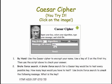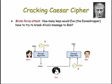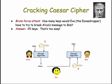Hopefully you enjoyed those exercises. How do you crack a Caesar cipher? In other words, how does Eve break these messages? One question you might ask is, how many different keys would Eve have to try to do what's called a brute force attack — that means try every possible key. As you've probably discovered, the answer is 25 keys. That's way too easy, so Eve is very happy that she can easily break Caesar cipher.